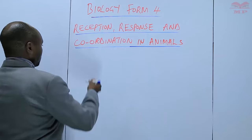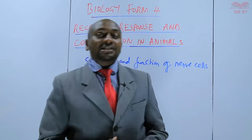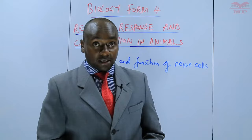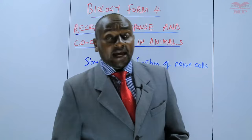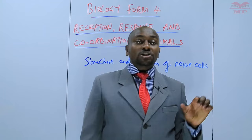When we talk of the structure and function of the nerve cells, it's worth mentioning that a nerve cell is the basic unit — the smallest unit — of a nervous system. A nerve cell, also known as a neuron, is a specialized cell modified for transmission of nerve impulses.